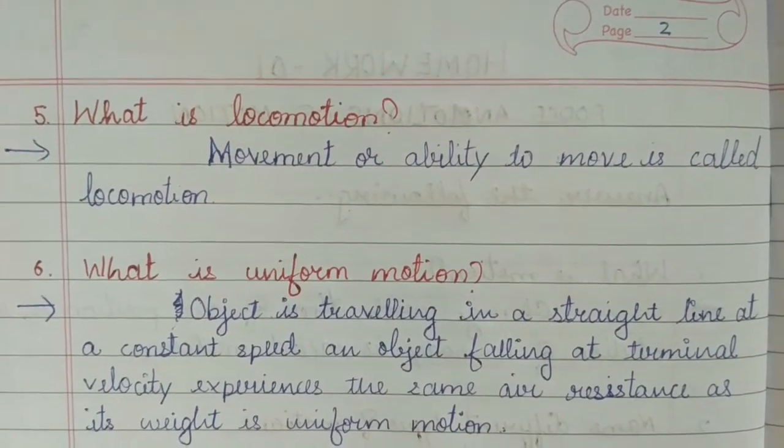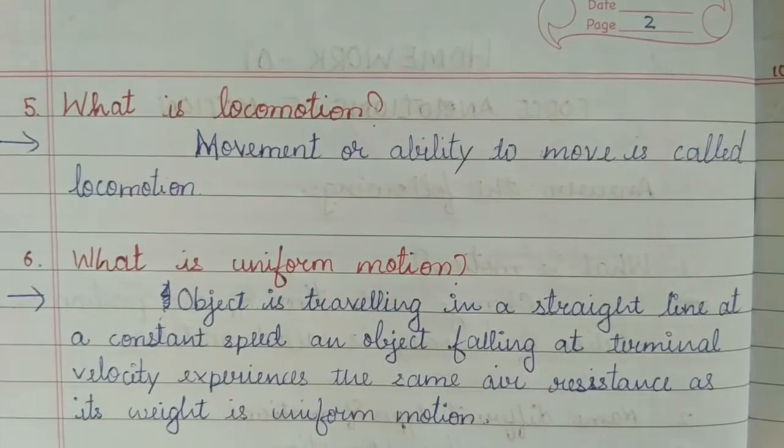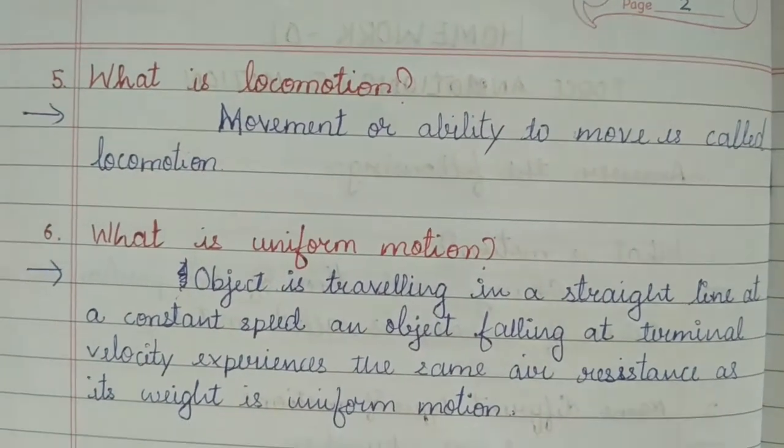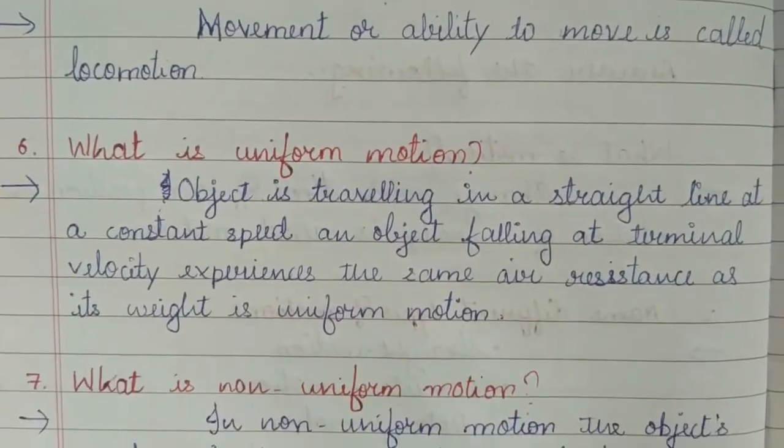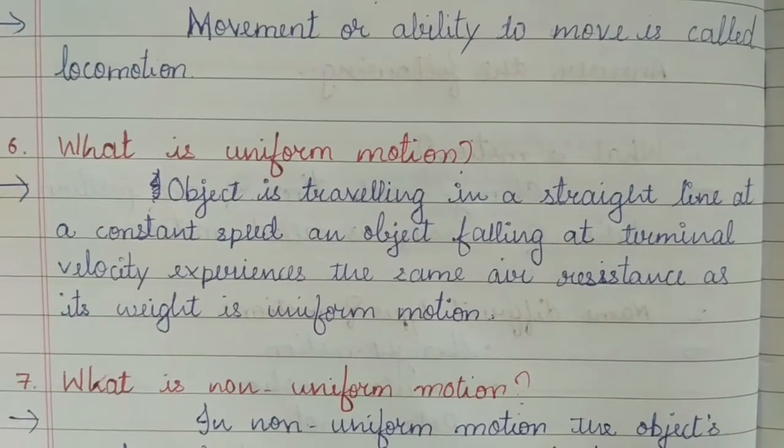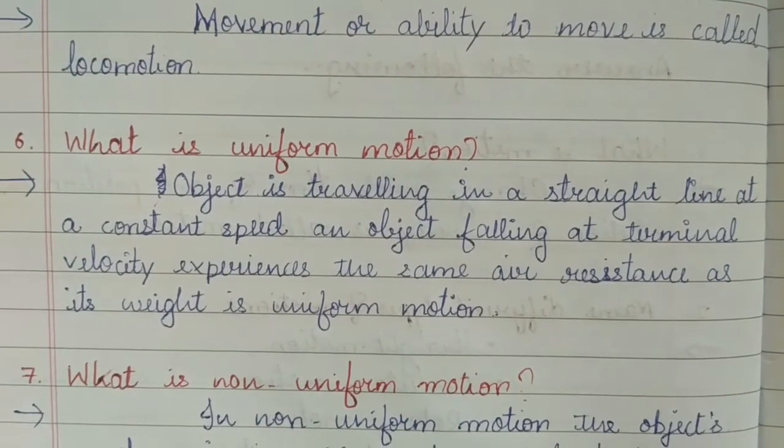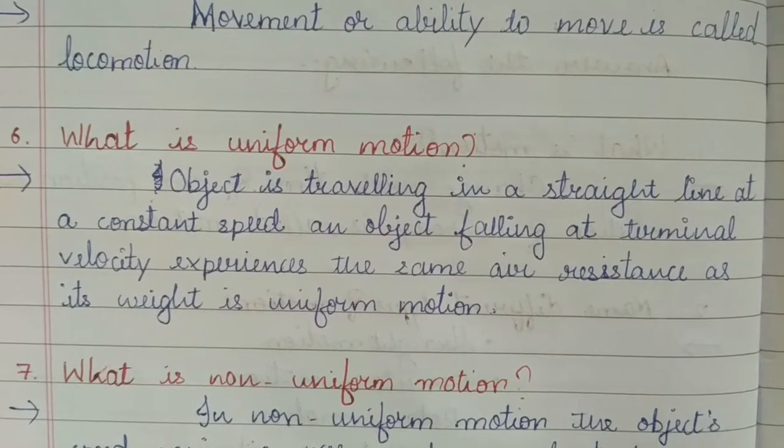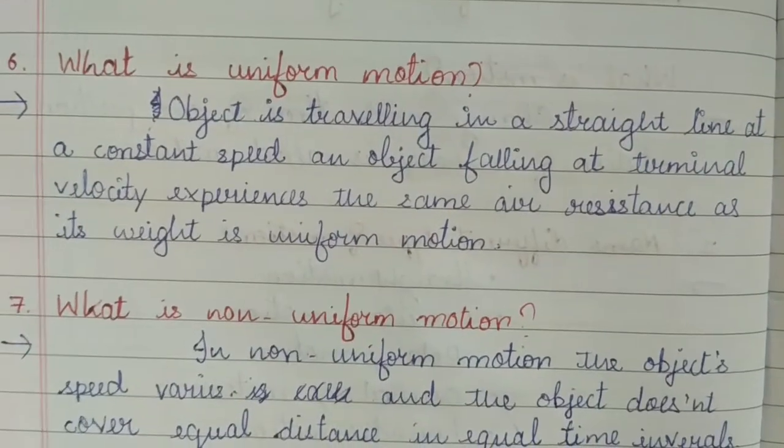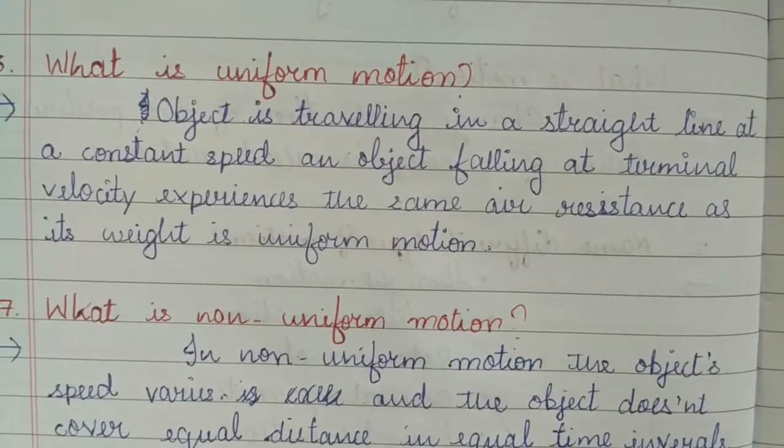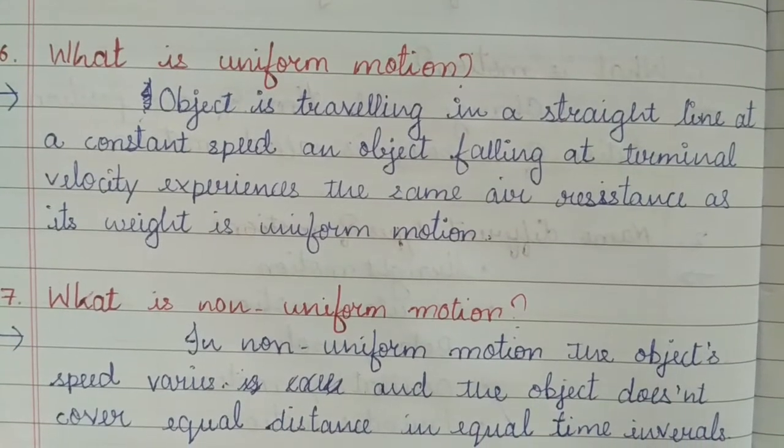What is locomotion? Answer: movement or ability to move is called locomotion. What is uniform motion? Answer: an object is traveling in a straight line at a constant speed. An object falling at terminal velocity experiences the same air resistance as its weight, this is uniform motion.